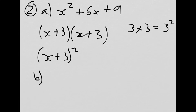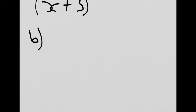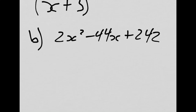B. We'll just do that one really quick. I've got 2x squared minus 44x plus 242. What do I always check for first? GCF. I have that. So I pull out a 2, leaving me with x squared minus 22x plus 121. Thank you.